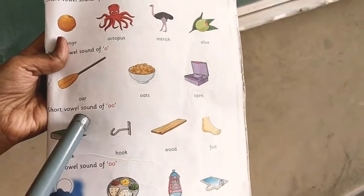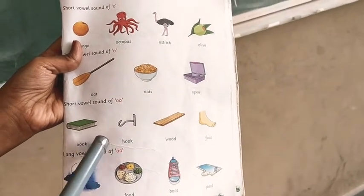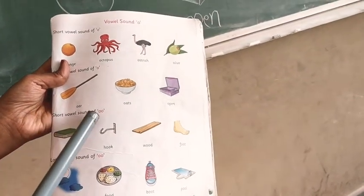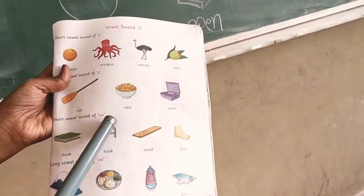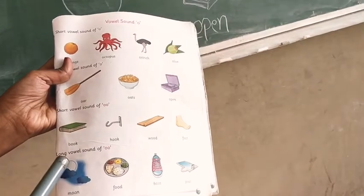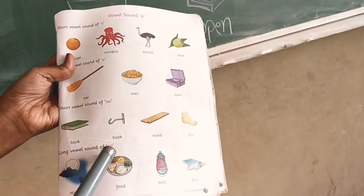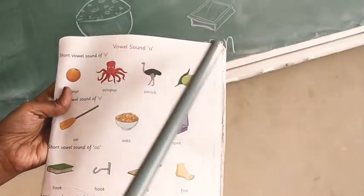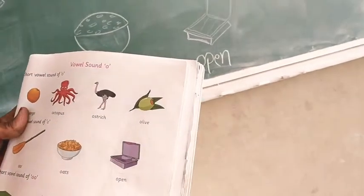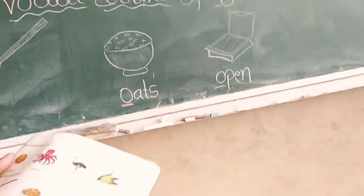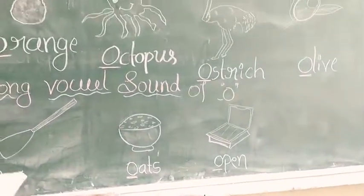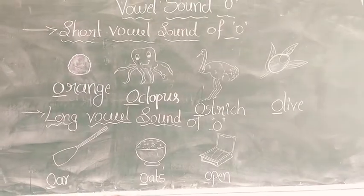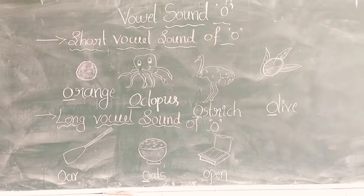In the next class, we will learn about these two: short vowel sound of O and long vowel sound of O. You have to practice at home and write in your four-line notebook. See you.